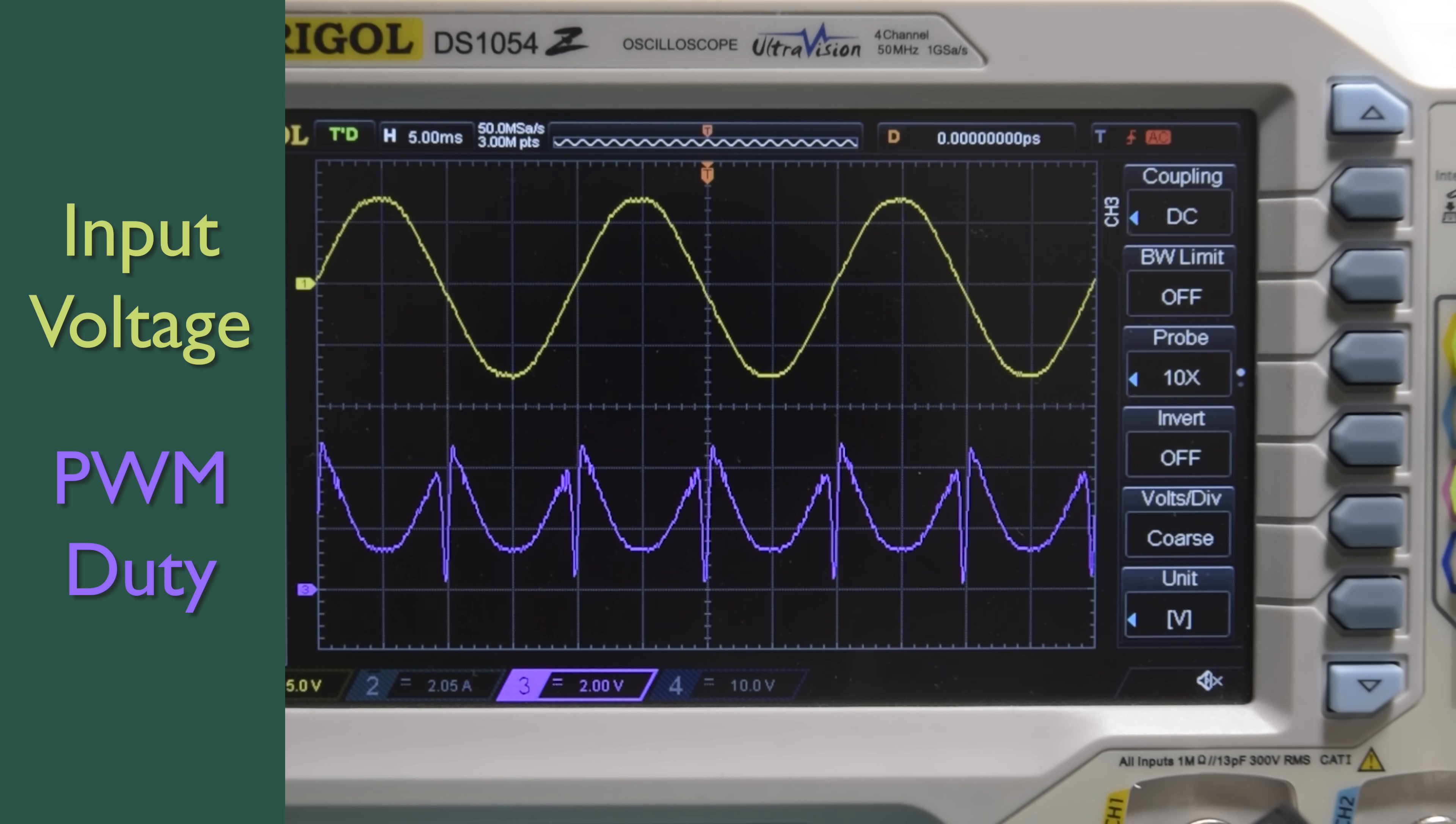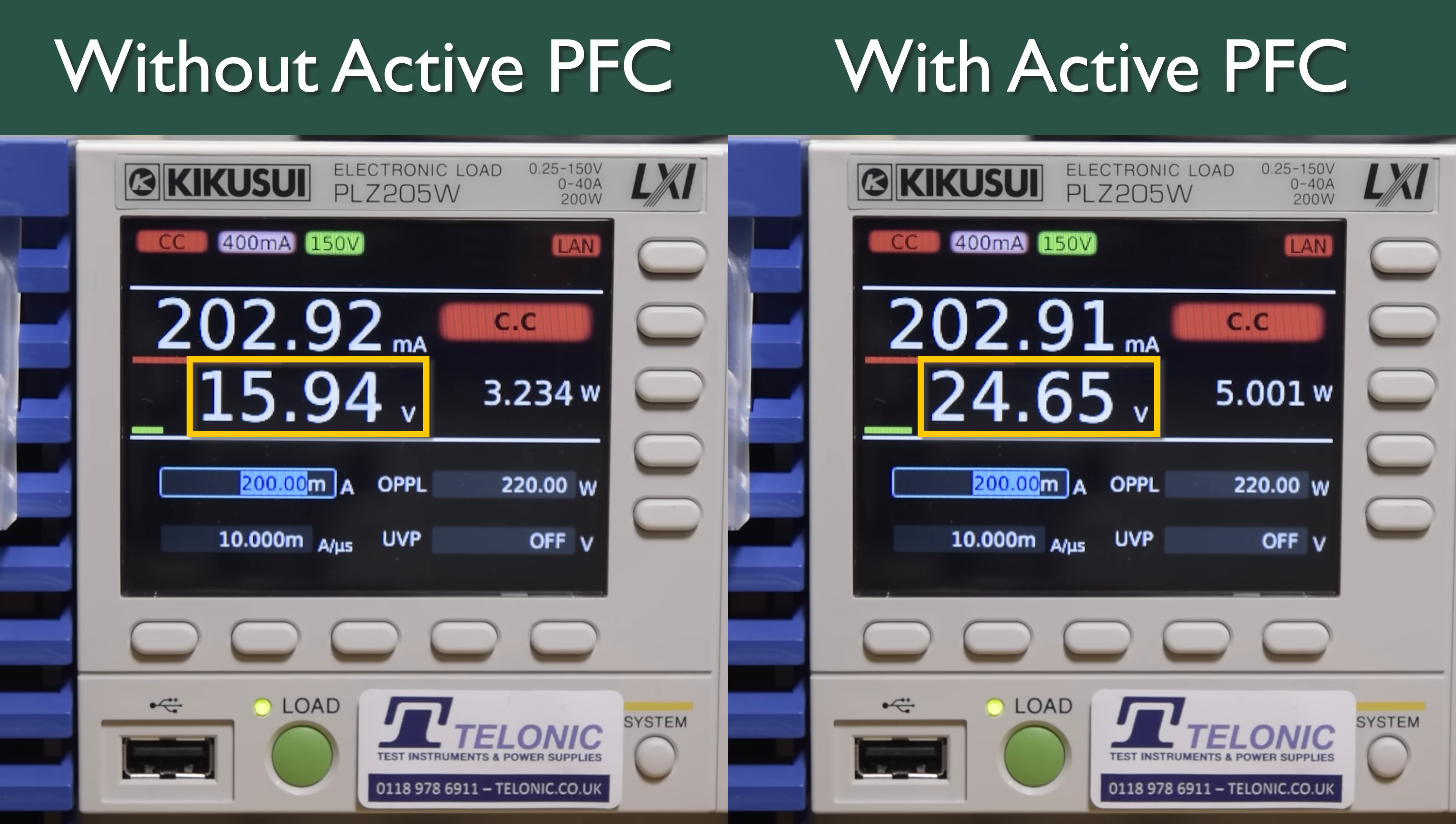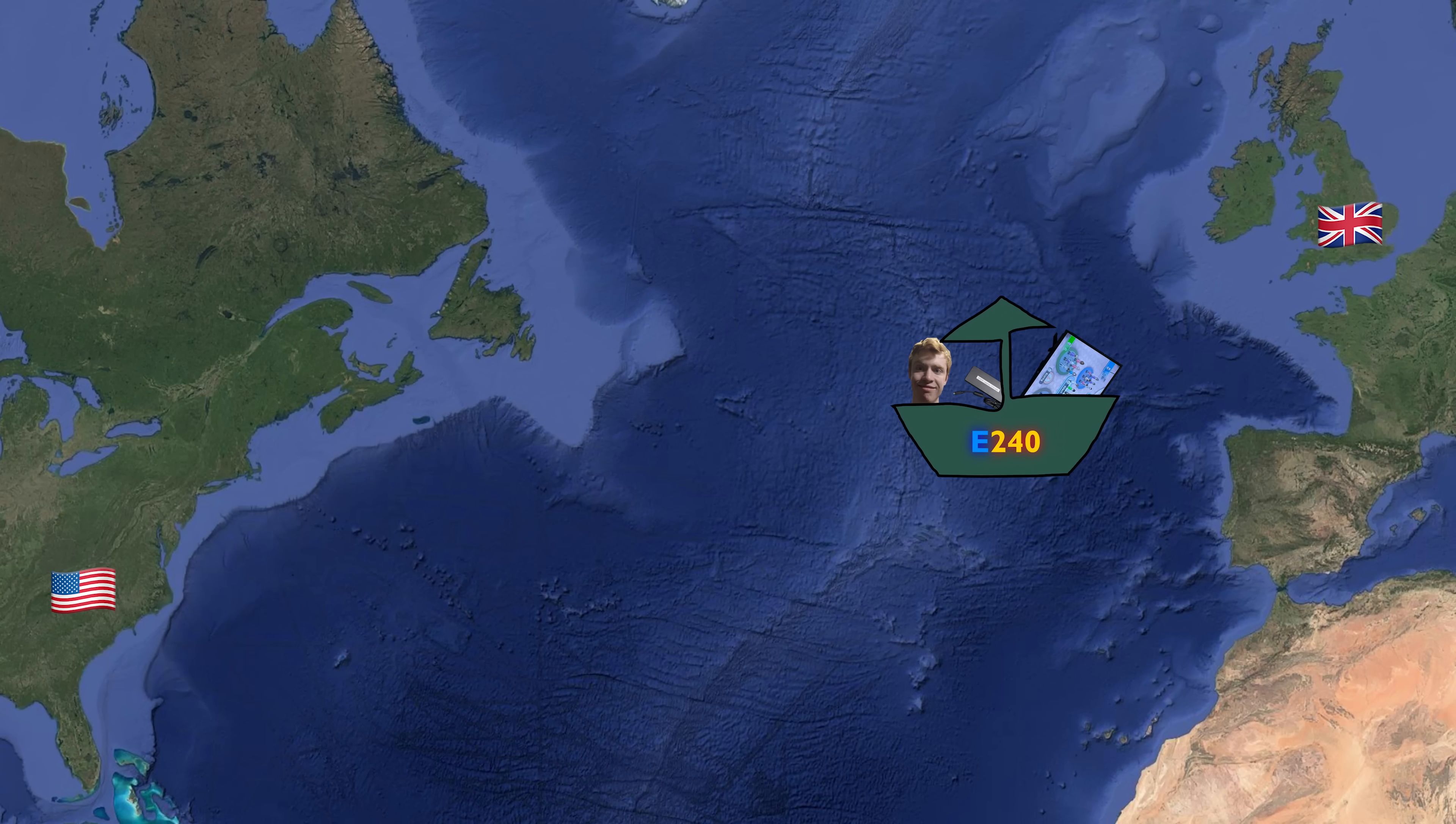Here we can see the averaged PWM signal that we are sending to the boost converter, and we can clearly see how the duty cycle is highest when the AC voltage is lowest, which makes sense because we have to boost it to get it up above our DC voltage and get current to flow. We can also see that the duty cycle is always above zero, which means we're always boosting, so our DC voltage is actually higher than it is without power factor correction.